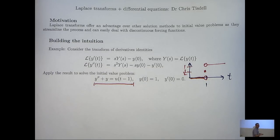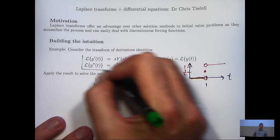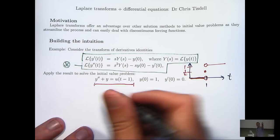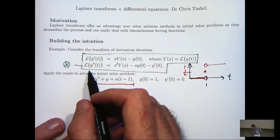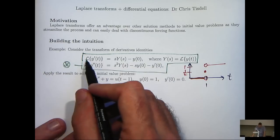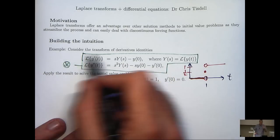Now an important identity that we're going to use in this example is this starred identity here, the transform of derivatives identity. Now if there was a y' down here as well, or y', we would use the first one also.